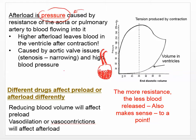An important point is that different drugs affect preload or afterload differently. If you have a really high preload — a lot of blood moving into that ventricle — that indicates high volume. You could take a diuretic, which makes you urinate more, reducing blood volume and therefore reducing preload. For afterload, since that's the pressure at which the ventricle is pushing, you could take a vasodilator to open the vessels and reduce your afterload.